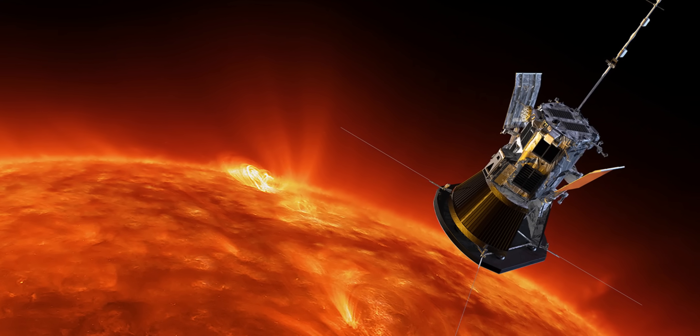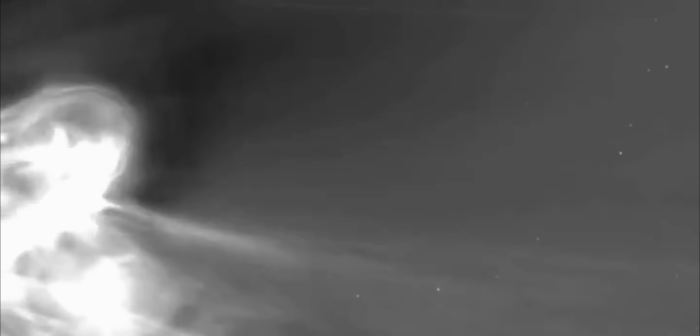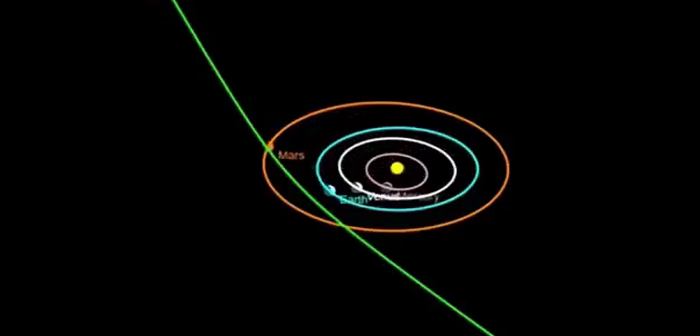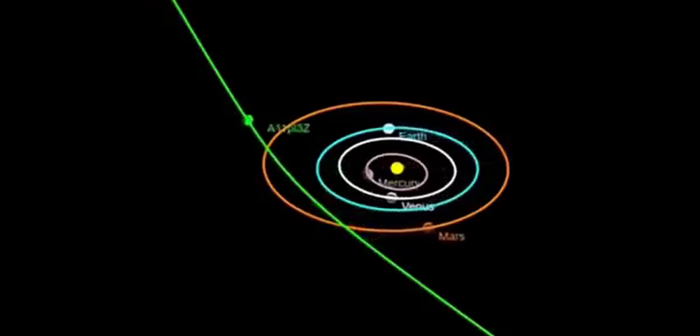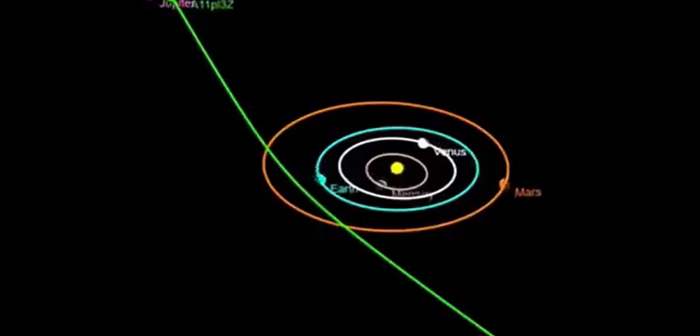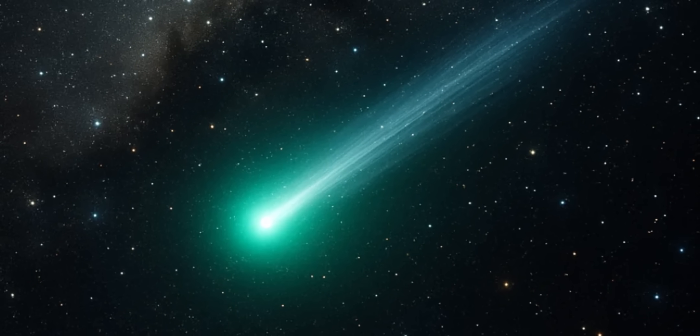The fastest probe humanity has ever launched, NASA's Parker Solar Probe, tops out around 19 kilometers per second. Atlas leaves it in the dust. It moves so quickly that our technology cannot chase it, cannot intercept it, cannot study it up close. It will come and go on its own terms. A ghost we can only glimpse from afar.